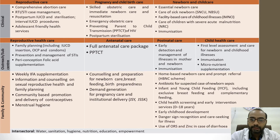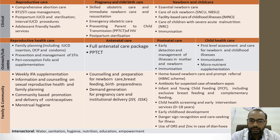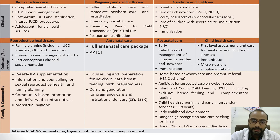During pregnancy and childbirth care, services include skilled obstetric care, immediate newborn care and resuscitation, emergency obstetric care, prevention of parent-to-child transmission of HIV, full antenatal care package, counseling and preparation for newborn care and breastfeeding, birth preparedness, and demand generation for institutional delivery under beneficial schemes like JSY and JSSK.